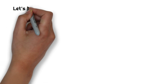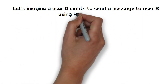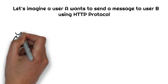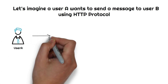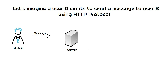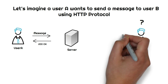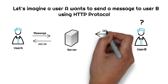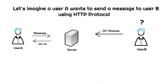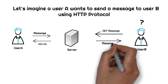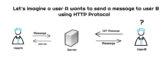Let's see if HTTP works. User A wants to send a message to User B. User A sends the message to the server, and the server replies with 200 if it's successfully posted. But how will User B get this message? One way is that User B will push a GET call to the server, and the server responds with the message if there is any for User B.